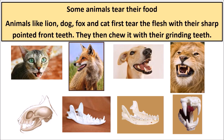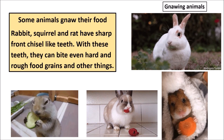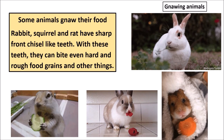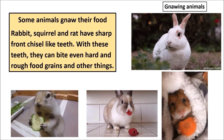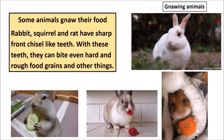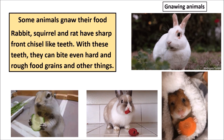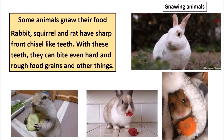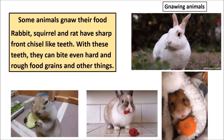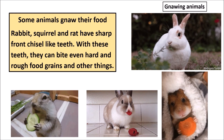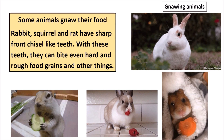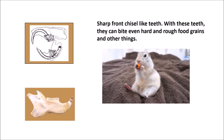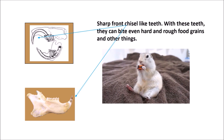Some animals gnaw their food. Rabbit, squirrel, and rat have sharp front chisel-like teeth. With these teeth they can bite even hard and rough food like grains and others.